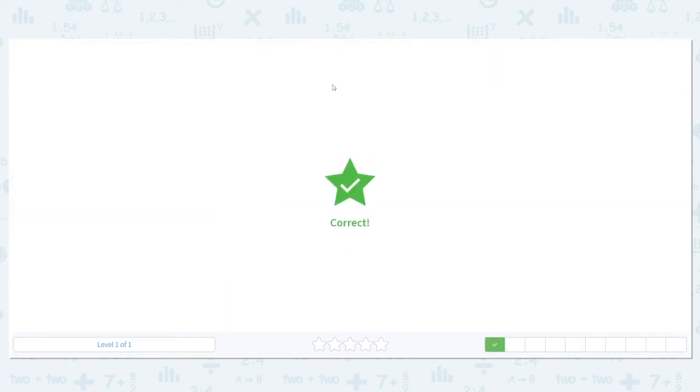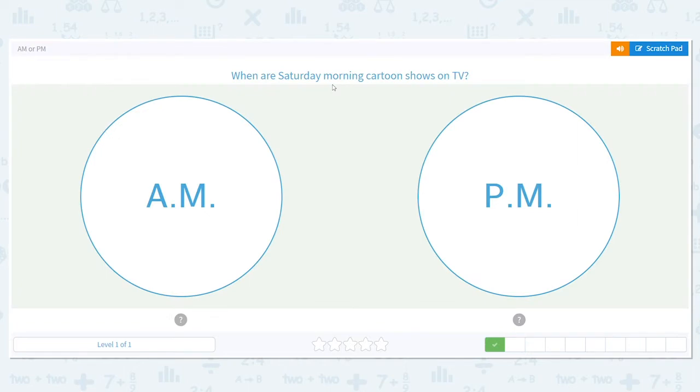A.M. comes before P.M. When did we say Saturday morning cartoons are A.M.? Because a way I can remember this is morning comes before night, right? You wake up in the morning, you go through your day, and then you go to bed. A comes before P in the alphabet.